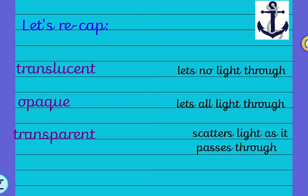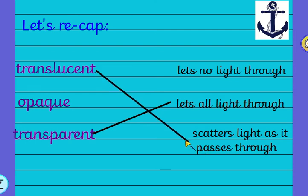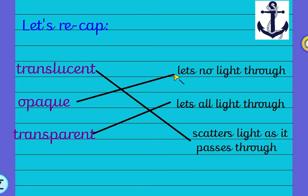Welcome back, and well done if you said that transparent is the one that lets all the light through — for example, a clear water bottle or a glass that you drink from. That means that translucent is the one that scatters the light as it passes through, for example coloured glass like stained glass windows or ice cubes. Which leaves us with opaque, and opaque is the one that lets absolutely no light through whatsoever — it is a hard surface, for example a book or a wooden door.